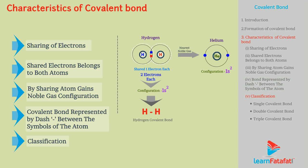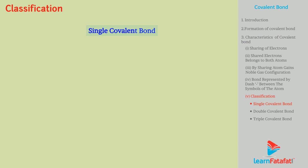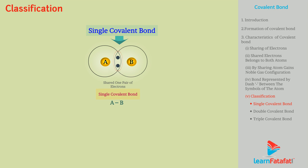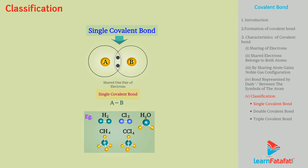Covalent bond can be classified as single covalent bond, double covalent bond, or triple covalent bond. Single covalent bond: the covalent bond formed by sharing of one electron each, or one pair of electrons, between atoms is called a single covalent bond. For example, the molecules H2, Cl2, H2O, and CH4 are formed by single covalent bond.